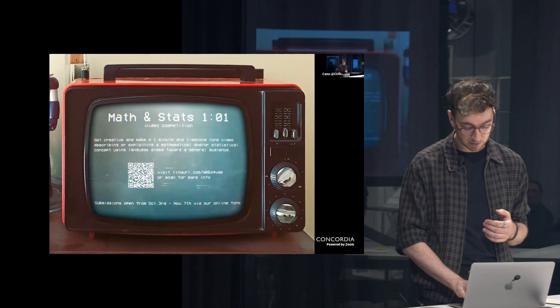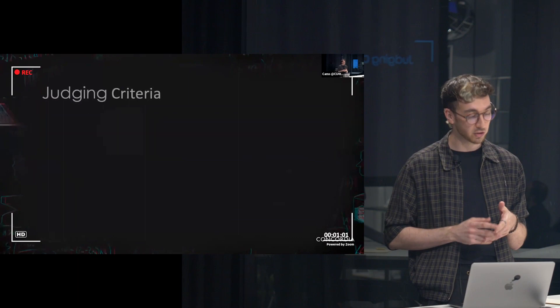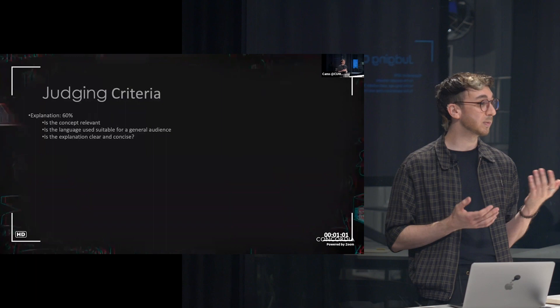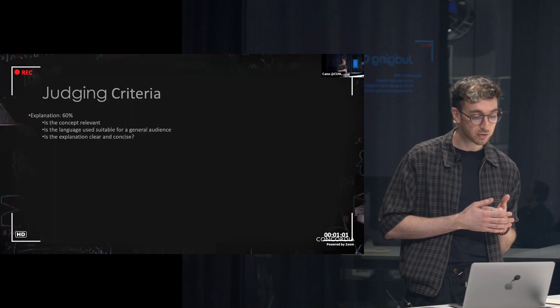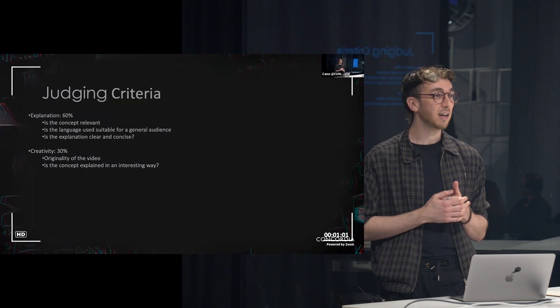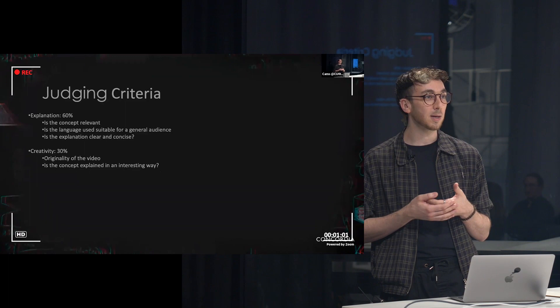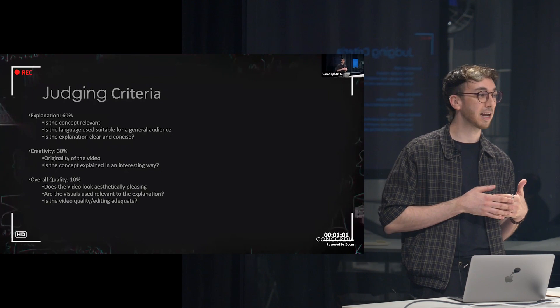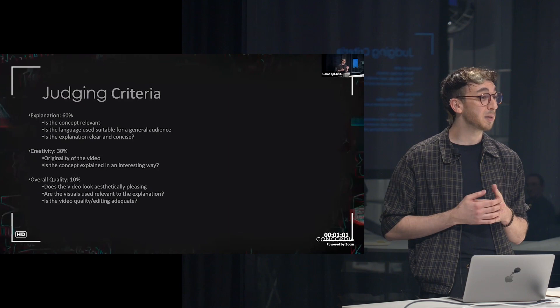Let's give you a quick overview of the judging criteria. We had three different criteria. The first was explanation of the project, scored at 60%: is the concept relevant to math and stats, is the language suitable for a general audience, and is the explanation clear and concise. The second criteria was creativity, worth 30% of the grade, judged on originality of the video and if the concept was explained in a new and interesting novel way. Finally we had 10% allocated to overall quality of the video: was it aesthetically pleasing, did they make good use of visuals and audio and so forth.